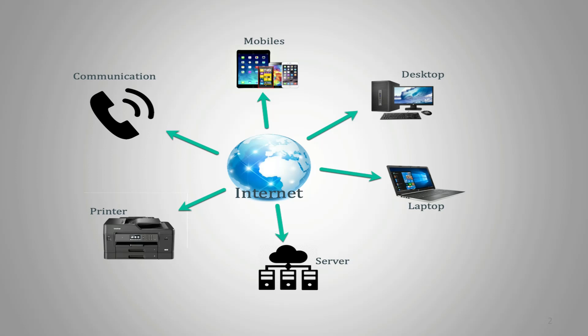What is internet? It is nothing but a network of millions of computers spread around the world. It is connected through the use of cables, telephone lines, and various other means. We can get any type of information from the internet, as well as communicate with anybody anywhere in the world with the help of internet within a few seconds.